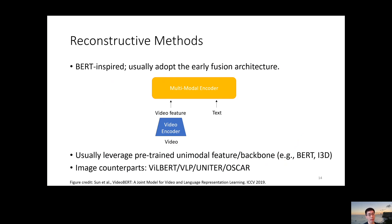For reconstructive methods, they are usually based on BERT, and they usually adopt the early fusion architecture. Given a paired video clip and text tags, we first pass the video through a video encoder such as I3D and SlowFast to get the video feature. We then feed it along with the tags into our multimodal encoder, usually a pre-trained BERT. In this architecture, the video feature and the tags are interacting with each other at the very early stage of the model, which is why we call it the early fusion architecture.